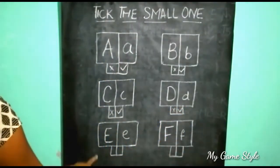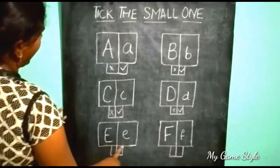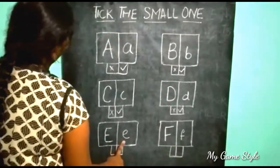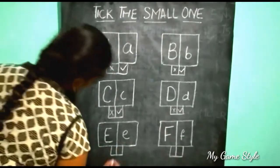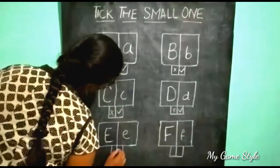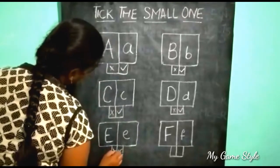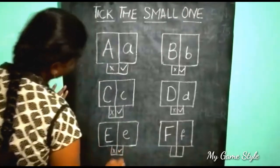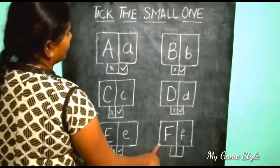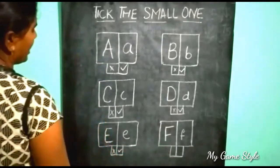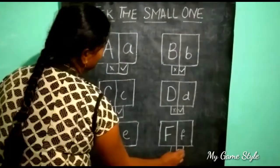Here, this is a big one and this is a small one. So we need to tick the small one. This is a small one. So we need to tick the small one. And here, this is a big one and this is a small one.